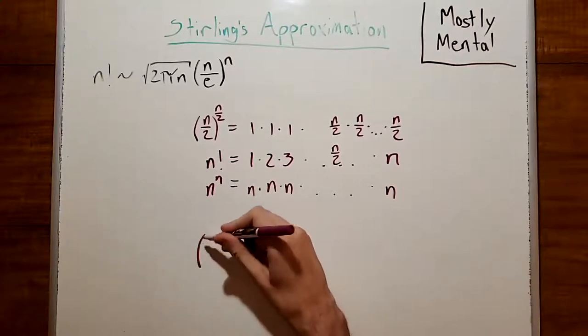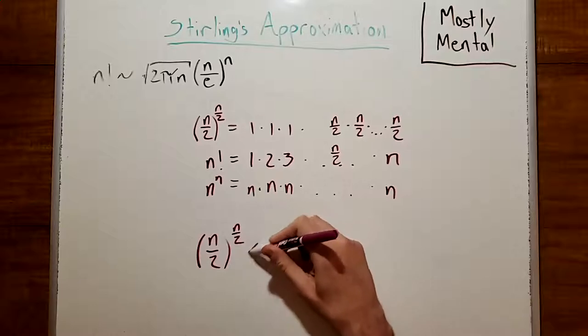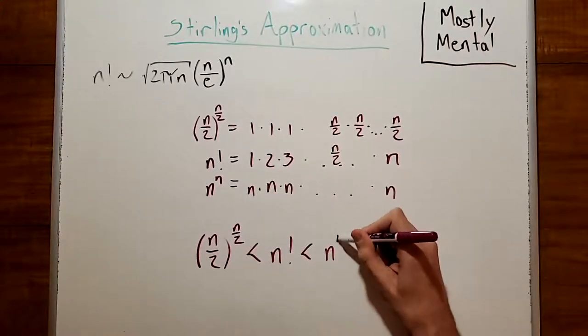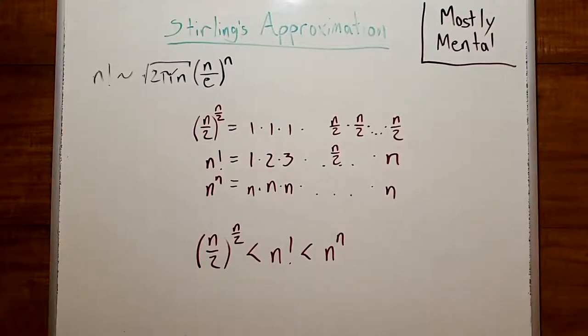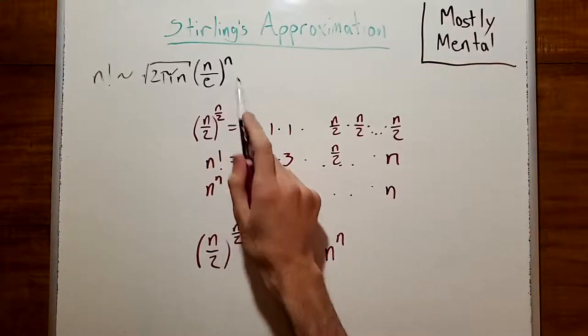And so, that tells us that n over 2 to the n over 2 is less than n factorial is less than n to the n. And so, we should expect that n factorial will look something sort of n to the n-ish. And sure enough, in Sterling's formula, we have n to the n right here.